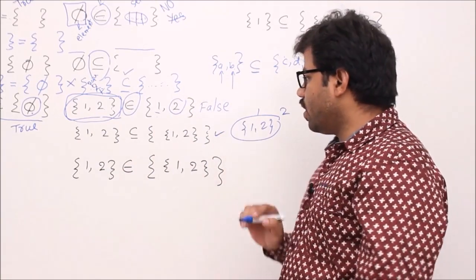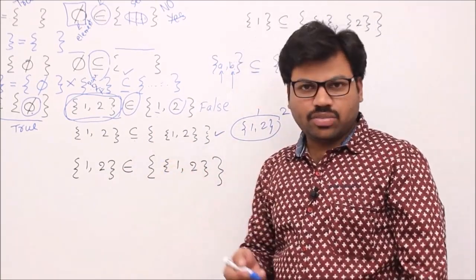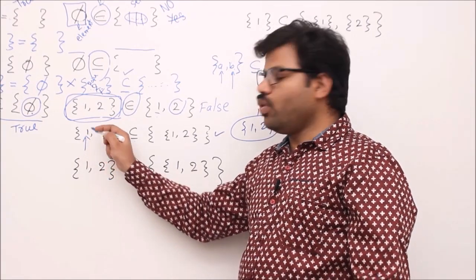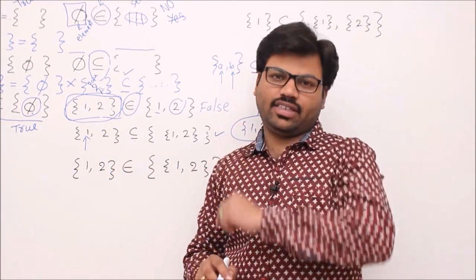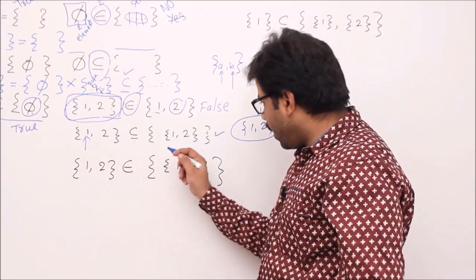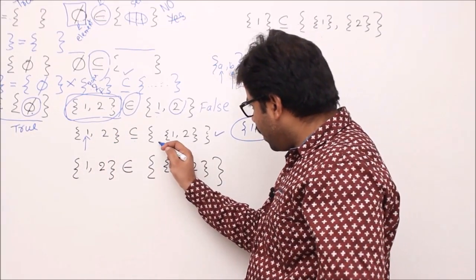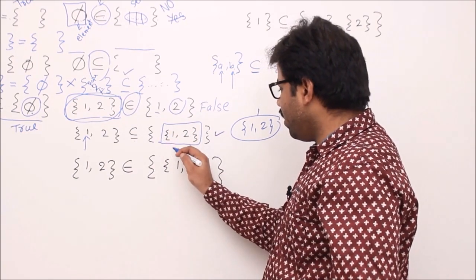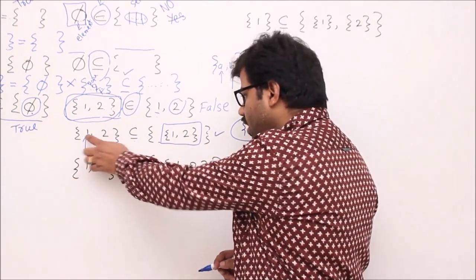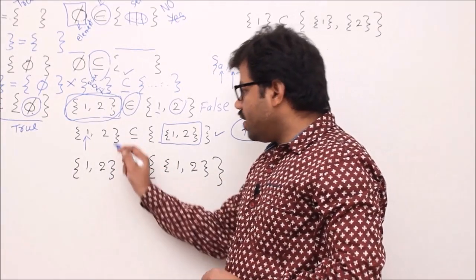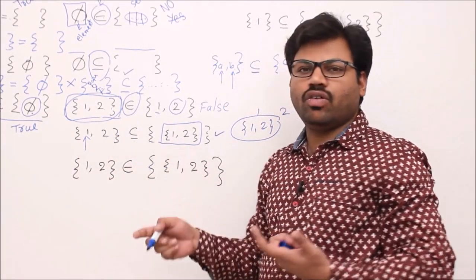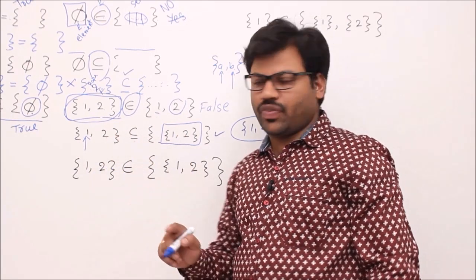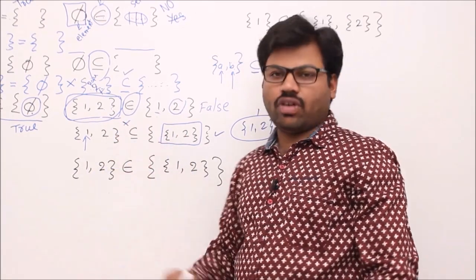Next: {1,2} ⊆ {{1,2}}. For subset or equal to, take every element of the left side and prove it belongs to the right side. The right side has only one element, which is the set {1,2}. Is 1 present as a member there? No. Is 2 present as a member there? No. Neither 1 nor 2 is present as an element, so subset or equal to is absolutely false.